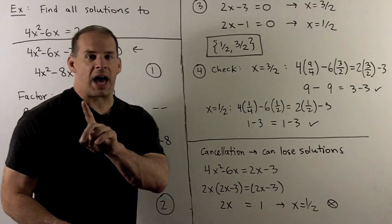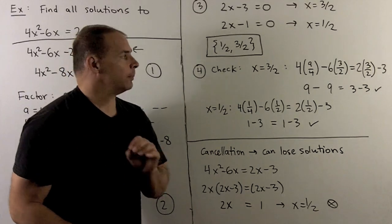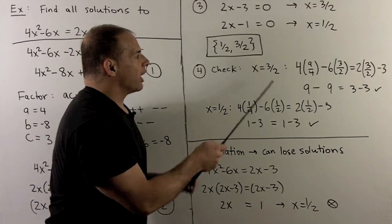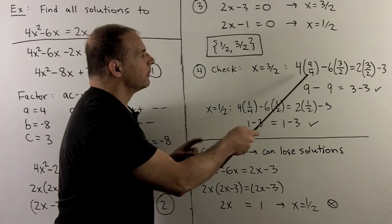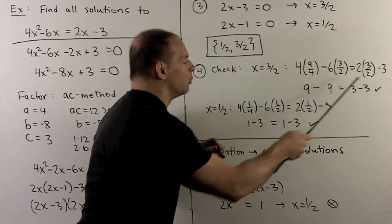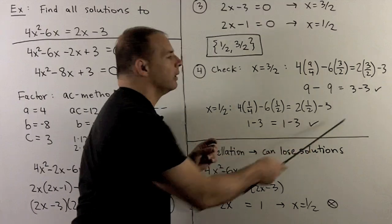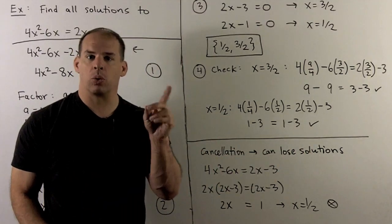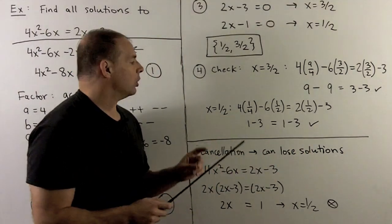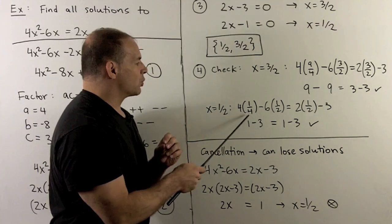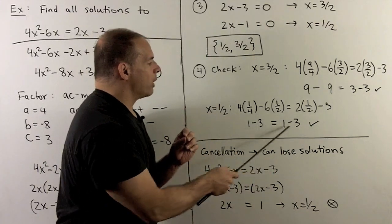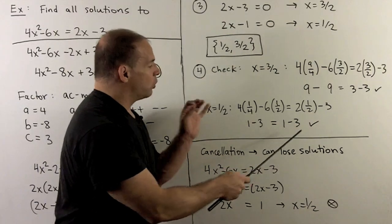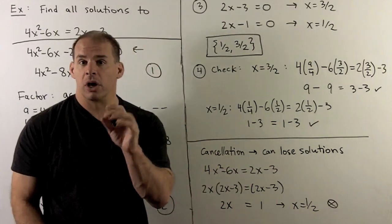Now, we check. It's optional, but you should always check your work. For the three halves, I go back to the original equation. Three halves squared is 9 over 4. We know when we work things out, we get zero equal to zero, and that checks my work. Our equation is satisfied. For one half, one half squared is 1 fourth. We work this out. I get 1 minus 3 equals 1 minus 3. And again, the equation is satisfied. So our work is checked.